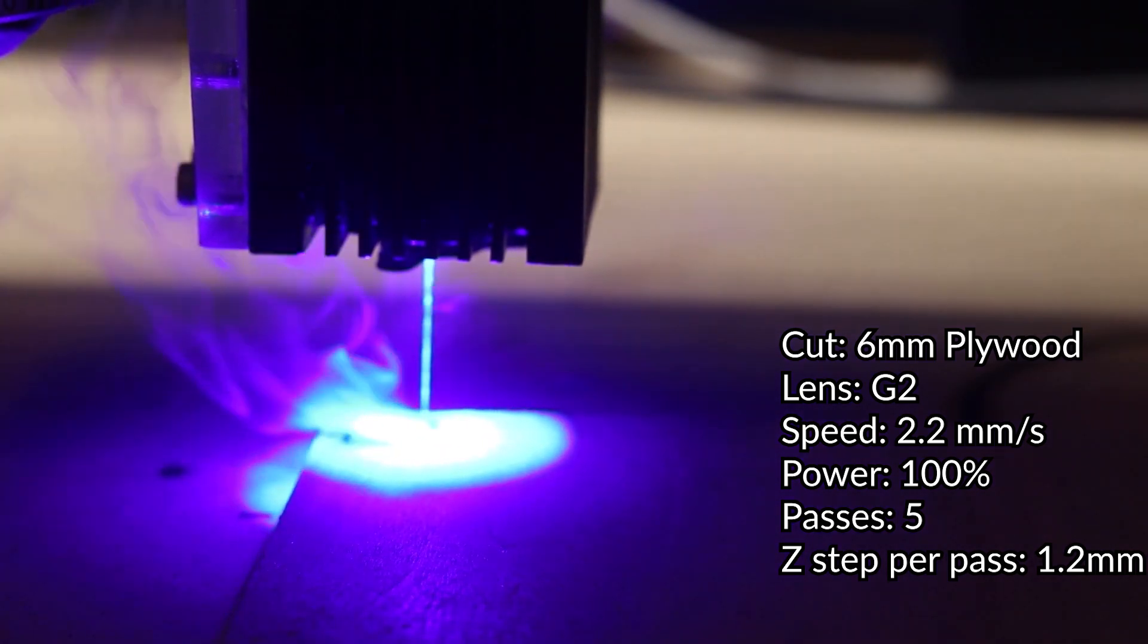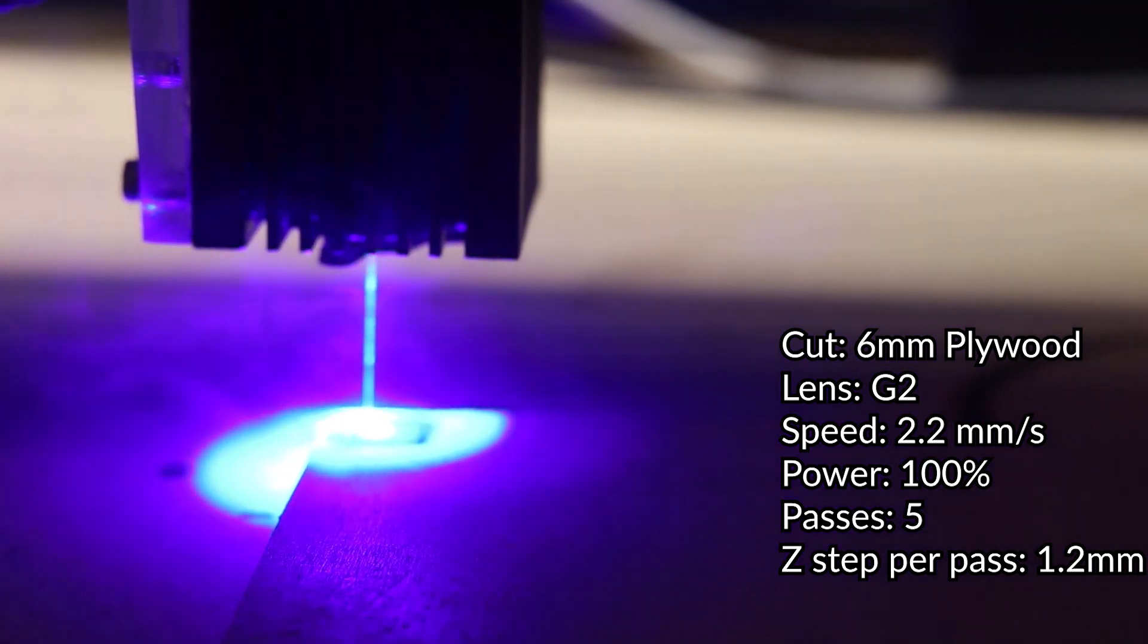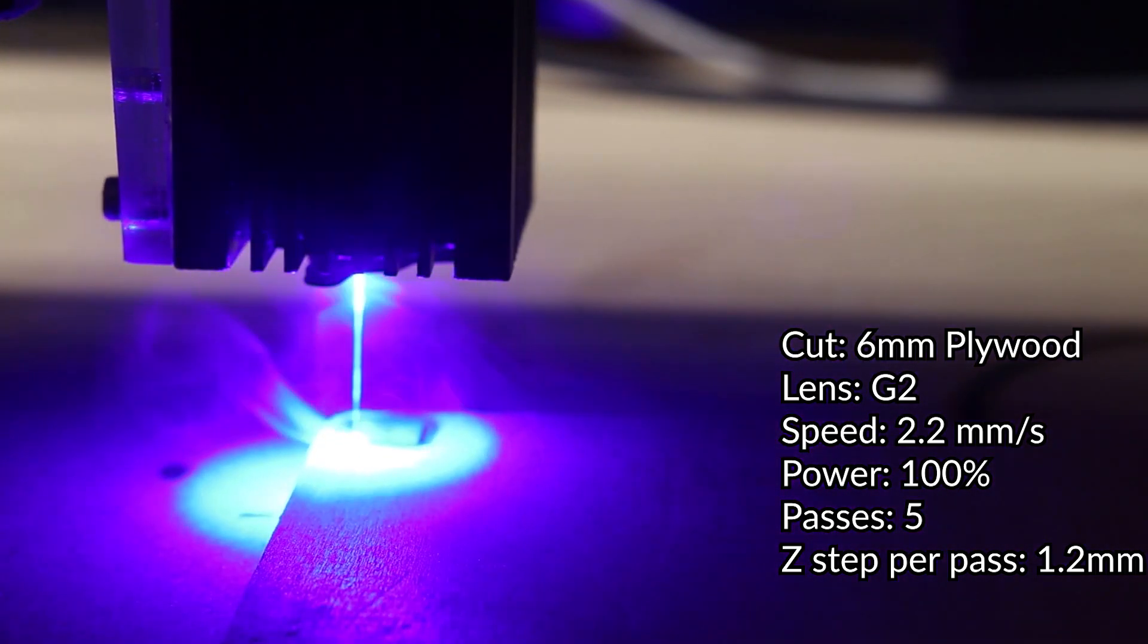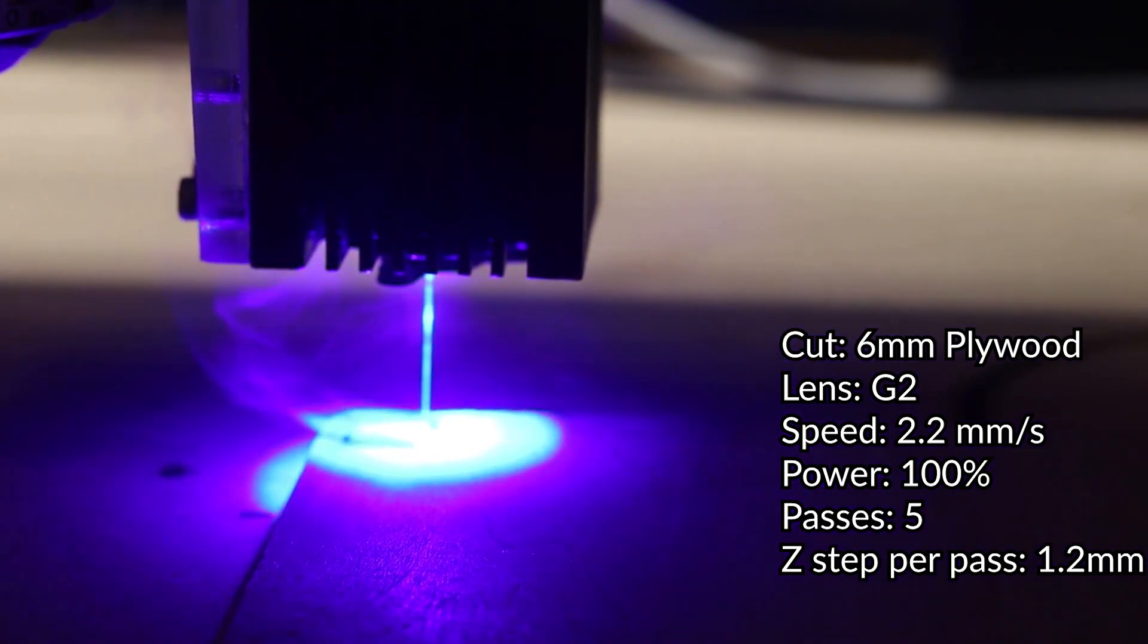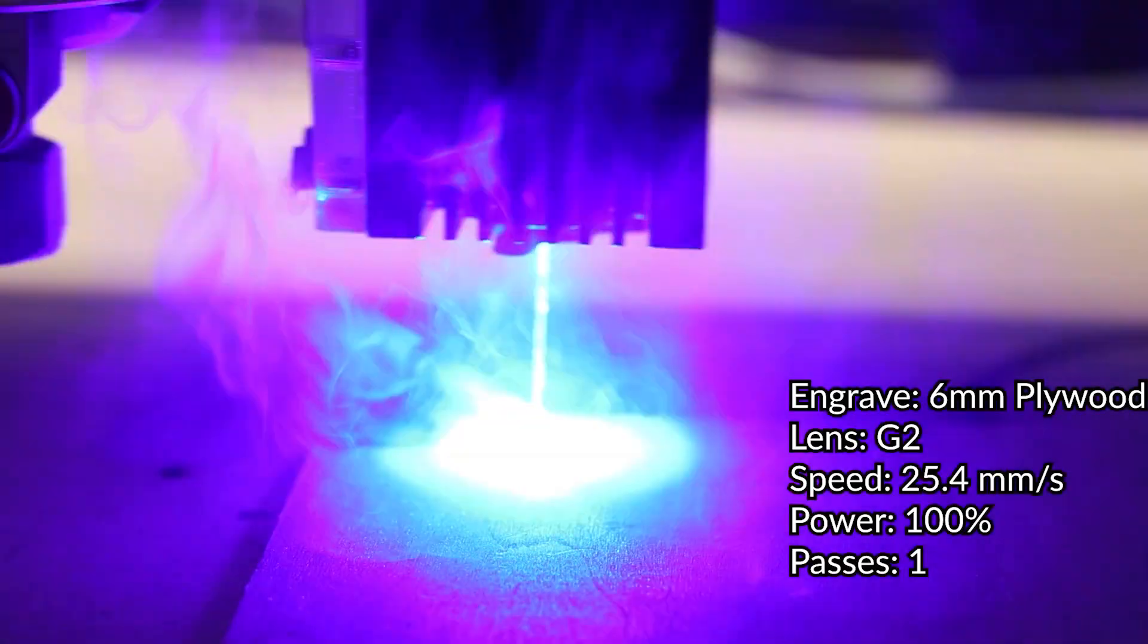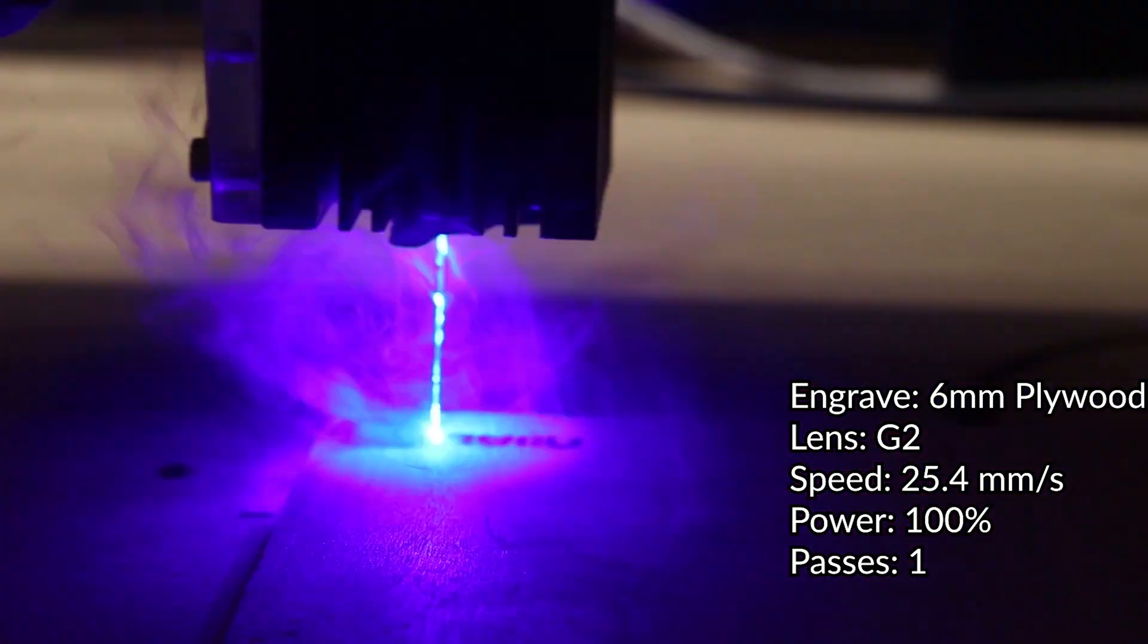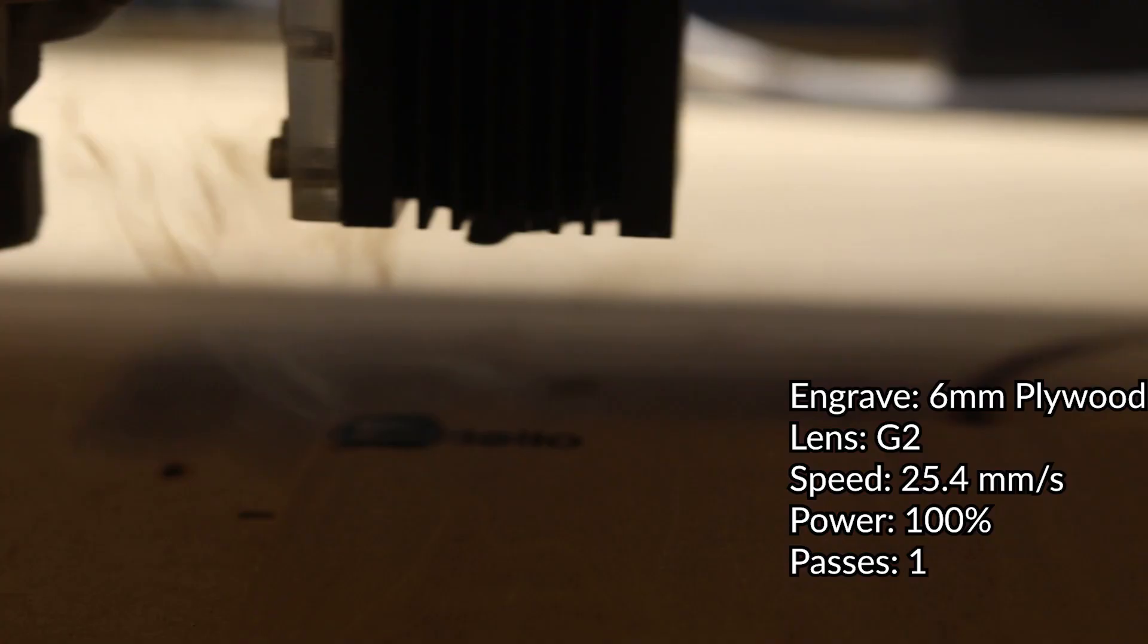When you start to get into the thicker wood—6 millimeter, 1/4 inch, which is the upper band of what you can cut with this laser—you're really going to want to play with a higher pass number and definitely lower power. Once again for engraving, just super simple. If you're already at 100% power and you're looking for a darker engraving, you can look at lowering the speed.